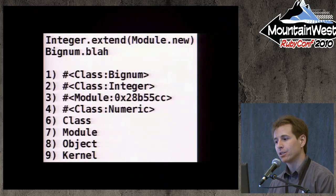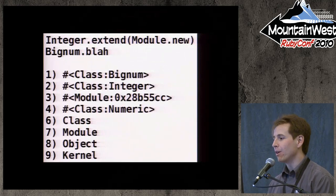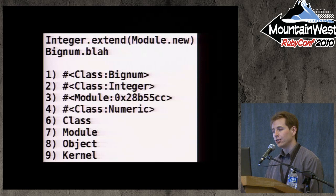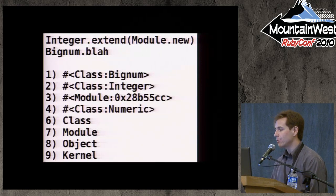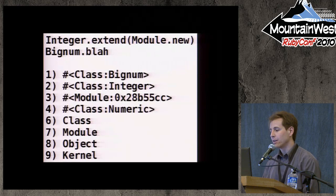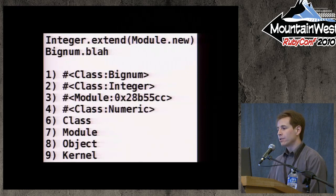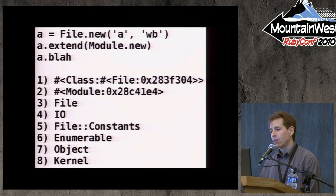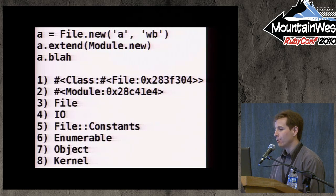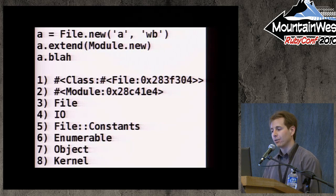Here's an example of the method lookup process for the class method of Bignum. If we extend the Integer class with a new module, it tries the singleton classes of Bignum and Integer, then the module that extends Integer, then the singleton class of Numeric. Since Numeric's superclass is Object, the singleton class of Numeric's superclass is Class — so it tries that next, followed by Module, Object, and finally Kernel. For an instance of File extended with a module, Ruby first looks at the singleton class of that object, followed by the module you extended the object with, followed by the File class, followed by the ancestors of File: IO, module FileConstants, Enumerable, Object, and finally Kernel.